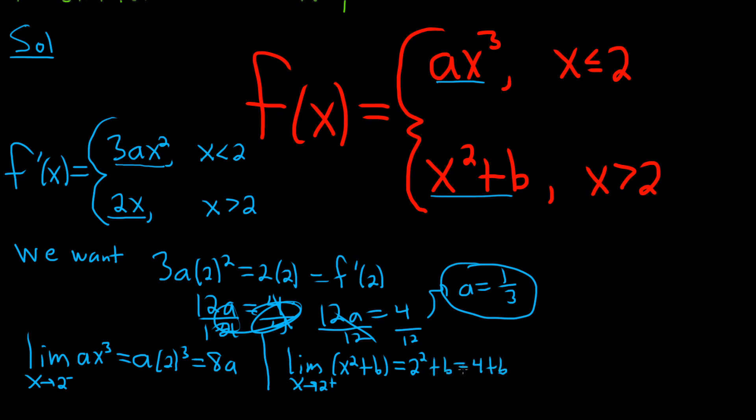So we want it to be continuous at 2. That means that 8a must be equal to 4 plus b. So 8a is equal to 4 plus b. But we know what a is. a is 1/3. So this is 8 times 1/3 equals 4 plus b.